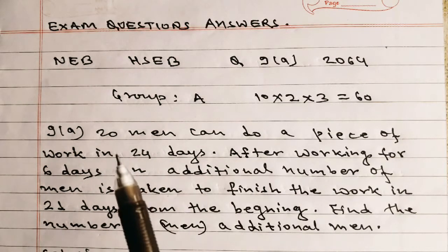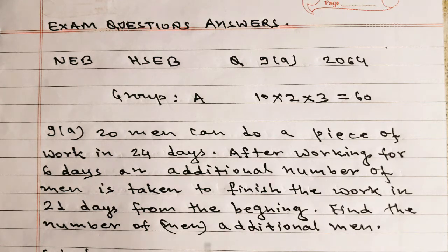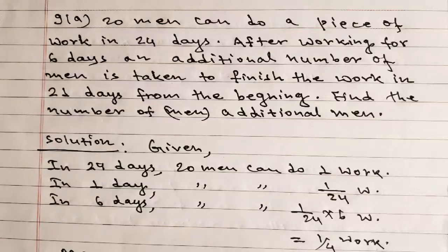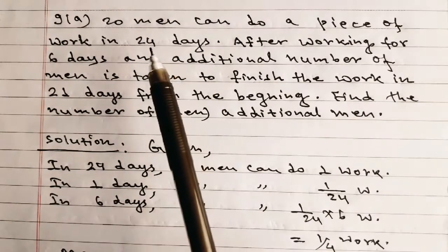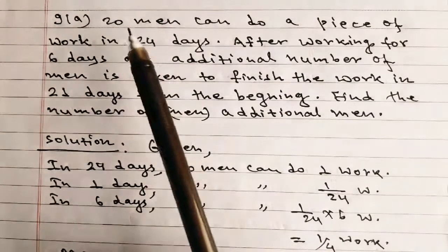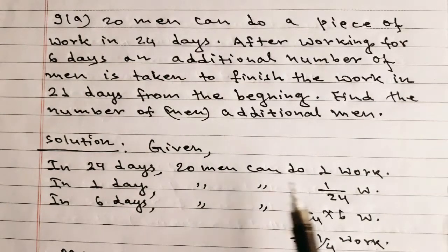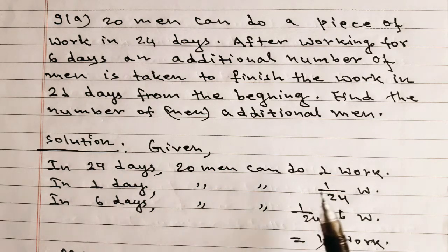This is a problem of inverse proportion. According to the question, in 24 days 20 men can do a piece of work, therefore in one day 20 men can do 1/24 of the work. In six days, 20 men can do 1/24 × 6 = 1/4 of the work.